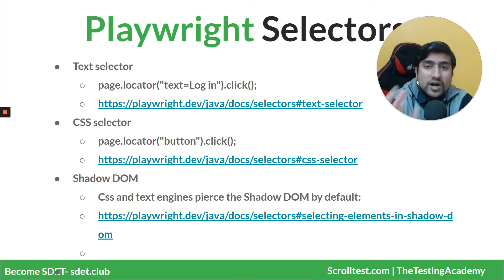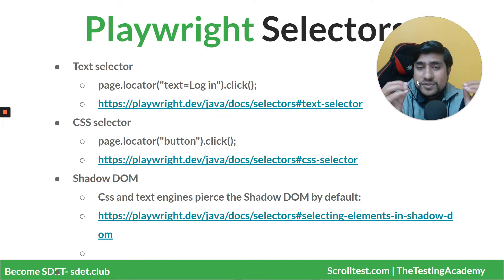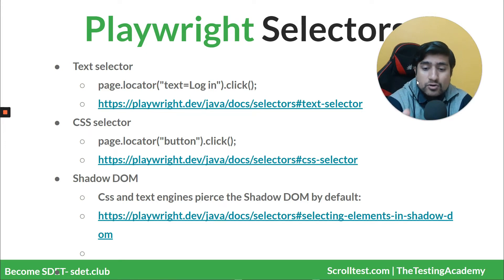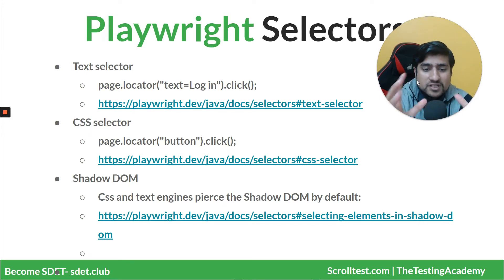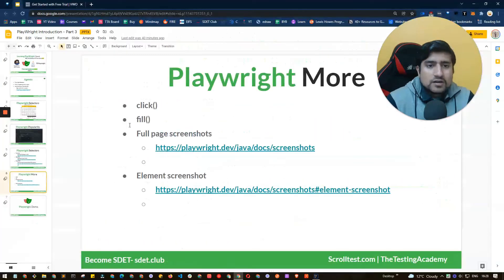If you have no idea about CSS selectors or XPath, I recommend going to sd.live/ytp — the YouTube channel of Testing Academy — where I've discussed CSS selectors and XPath extensively. Playwright also supports Shadow DOM, which is great because modern web applications extensively use shadow DOMs. That's enough theory — let's jump directly to the demos.